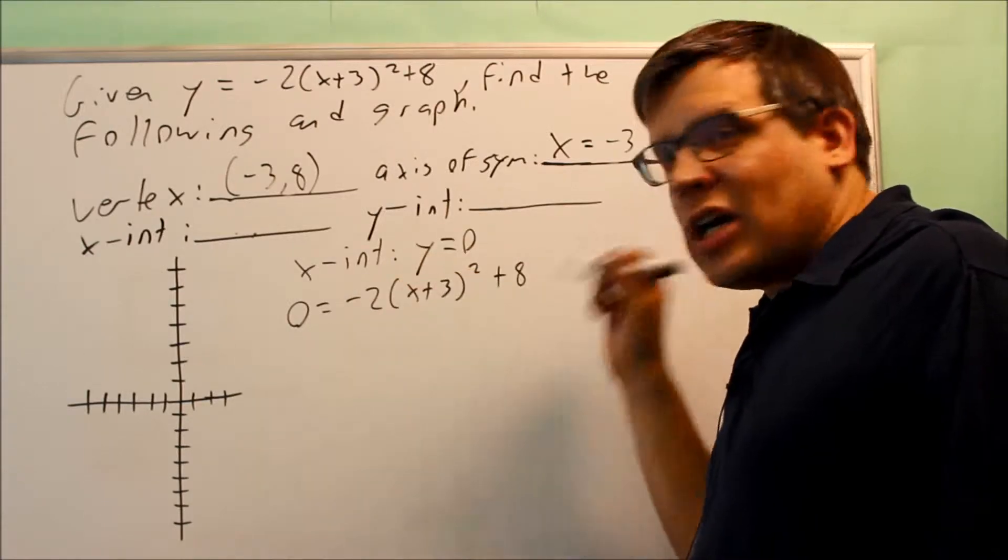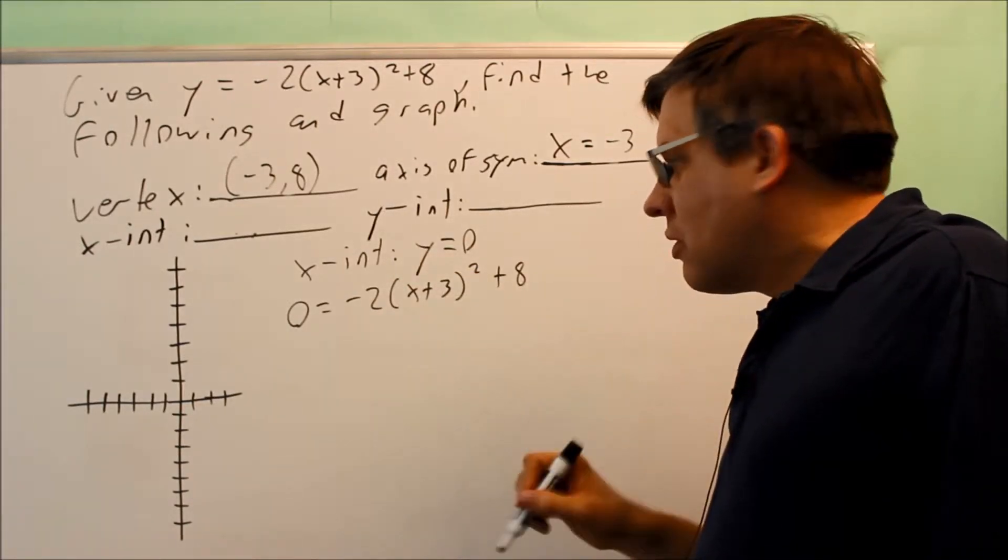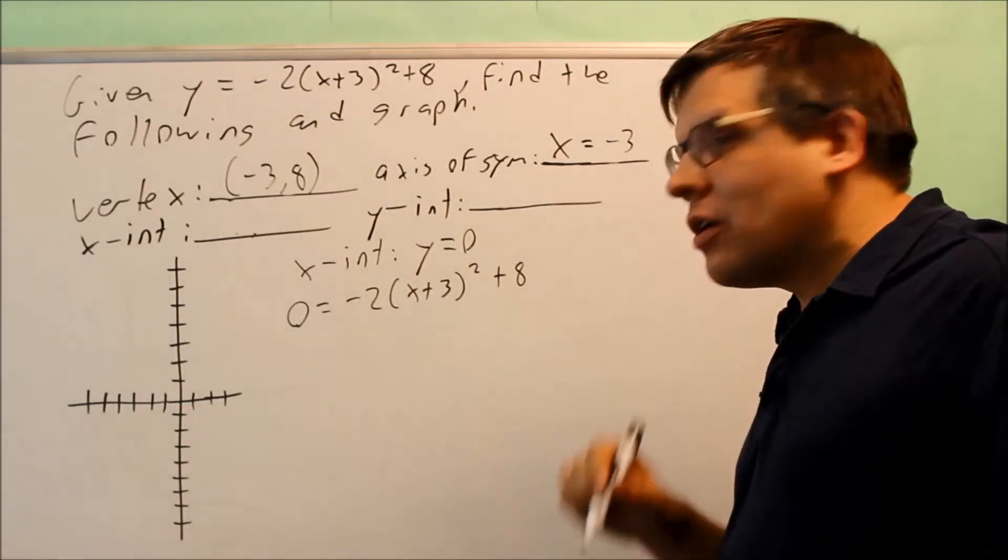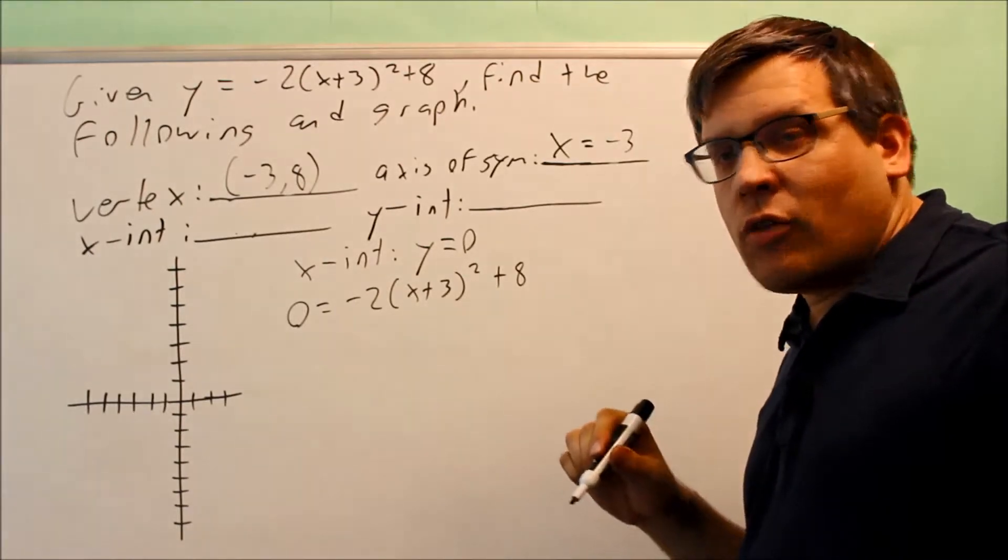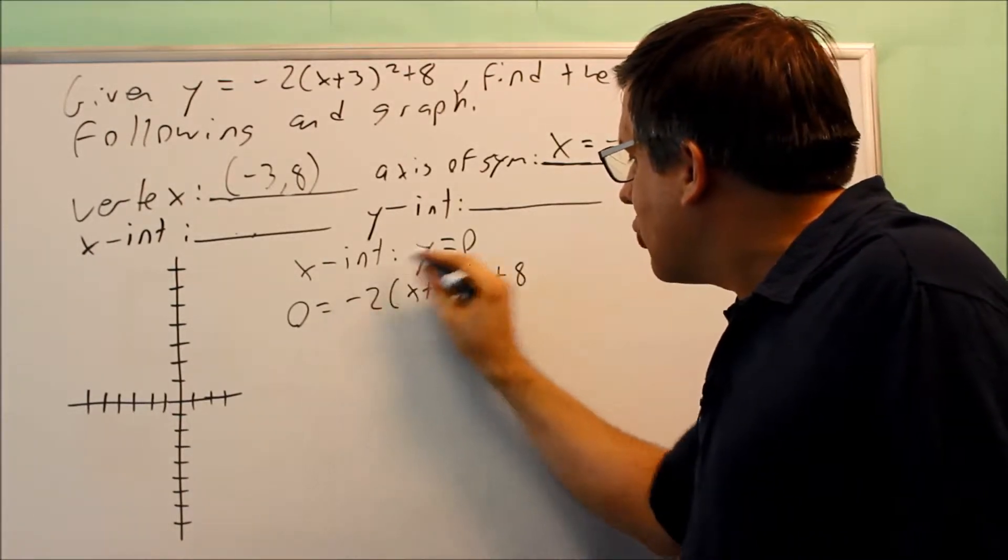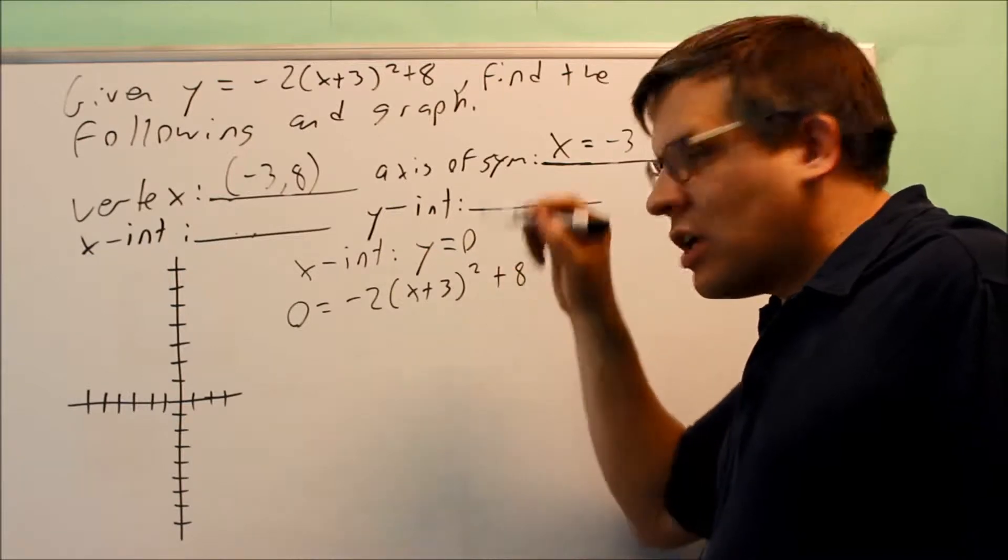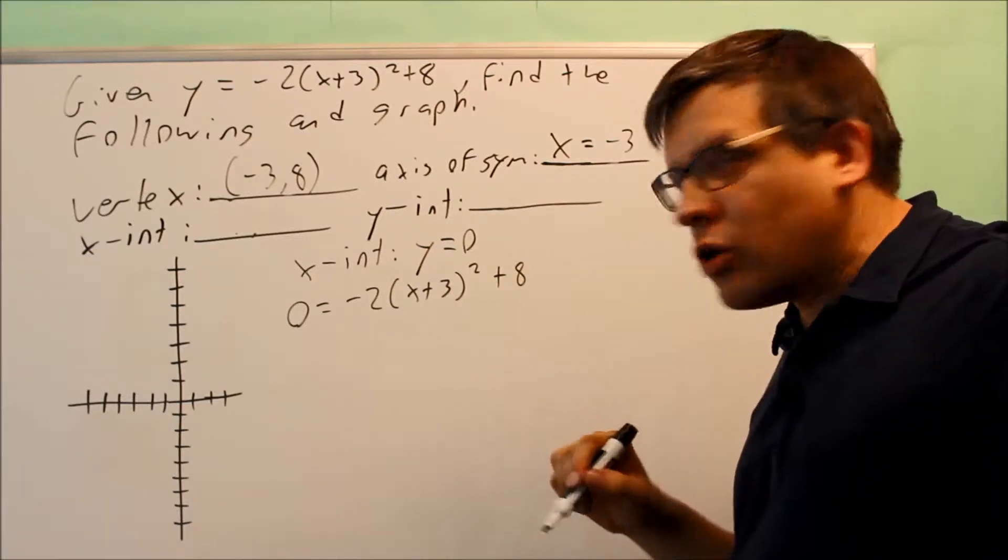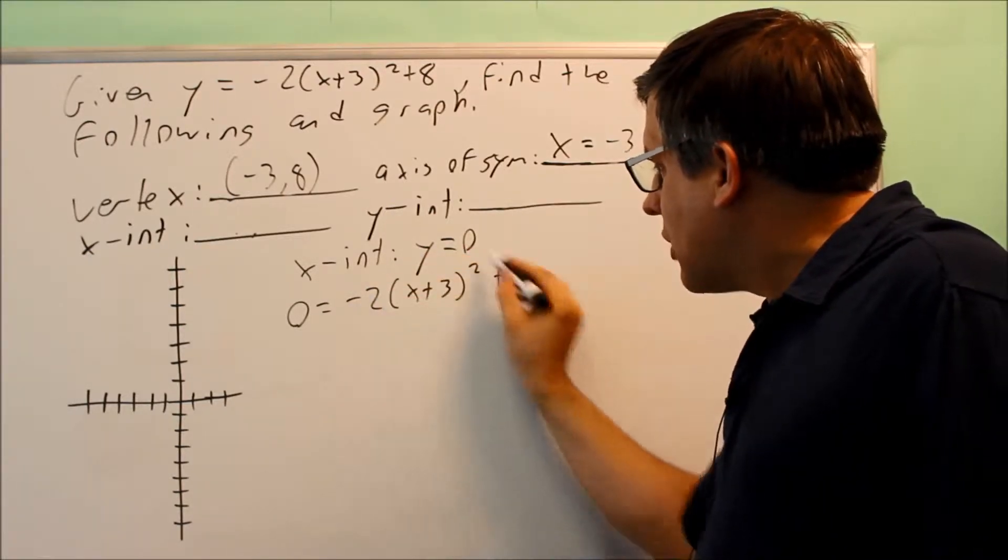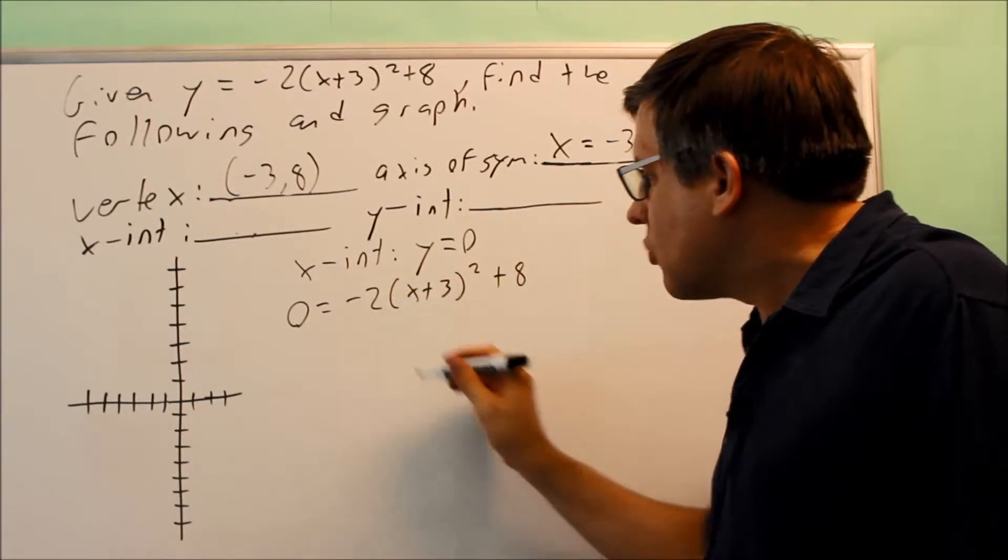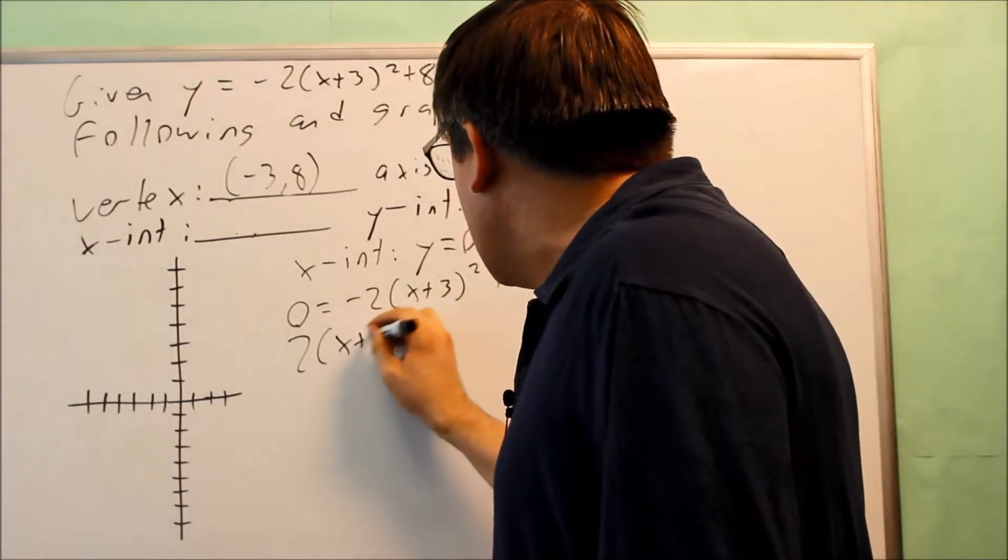You could either multiply all of it out, distribute everything, add the like terms together, factor it, and then get the answer that way. But instead, an easier way of doing that would be to actually take the square root of both sides and use the square rooting method, and that's because I have something that's written as a square, quantity squared there, so I can go ahead and do it that way.